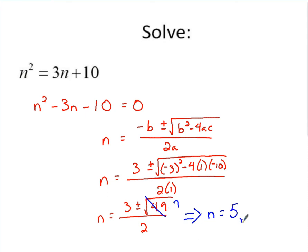But it could also be 3 minus 7, negative 4. Negative 4 over 2, which is negative 2. There's your solutions for n.